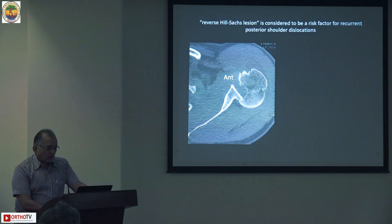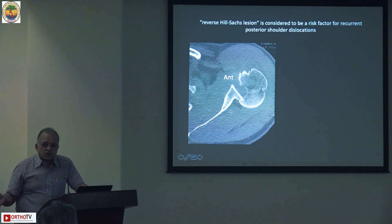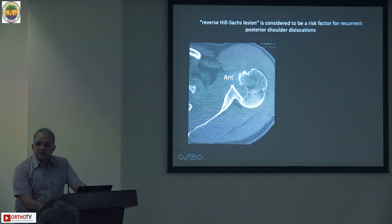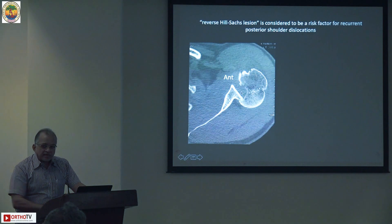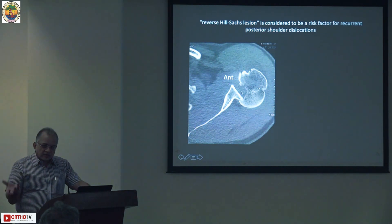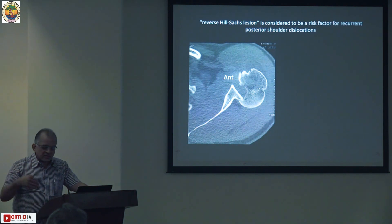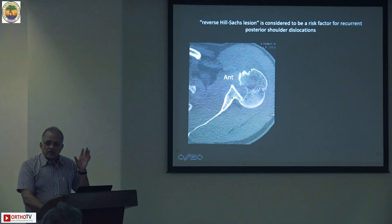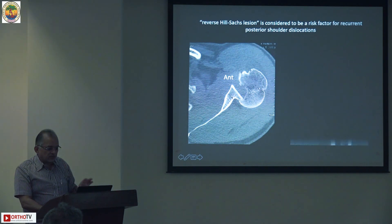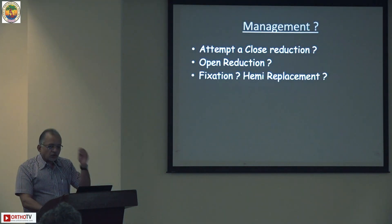There is also an entity of locked posterior dislocation - exactly like the anterior locked dislocation, the humeral head is locked posteriorly. On CT you can see the anterior side, posterior side, the bicipital groove, the greater tuberosity, and a defect. Just as we have a Hill-Sachs lesion on the anterior side, we have a reverse Hill-Sachs here in posterior dislocation - an impression defect around the attachment of the subscap around the lesser tuberosity.